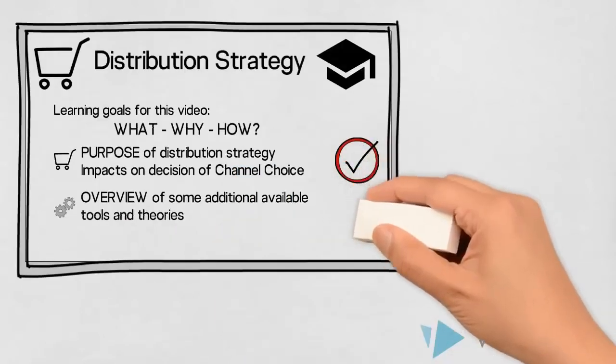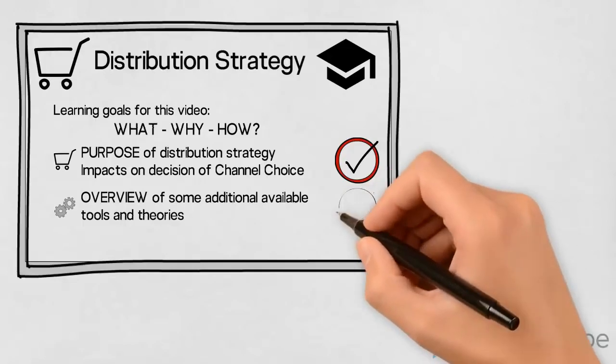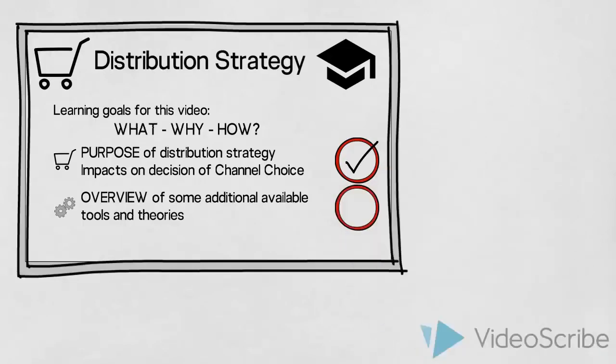We have now established an understanding of the purpose of distribution strategy, the different factors that impact our choice, and lastly we have presented an overview of some additional tools and theories available to us when determining a suitable place to distribute our product or service.